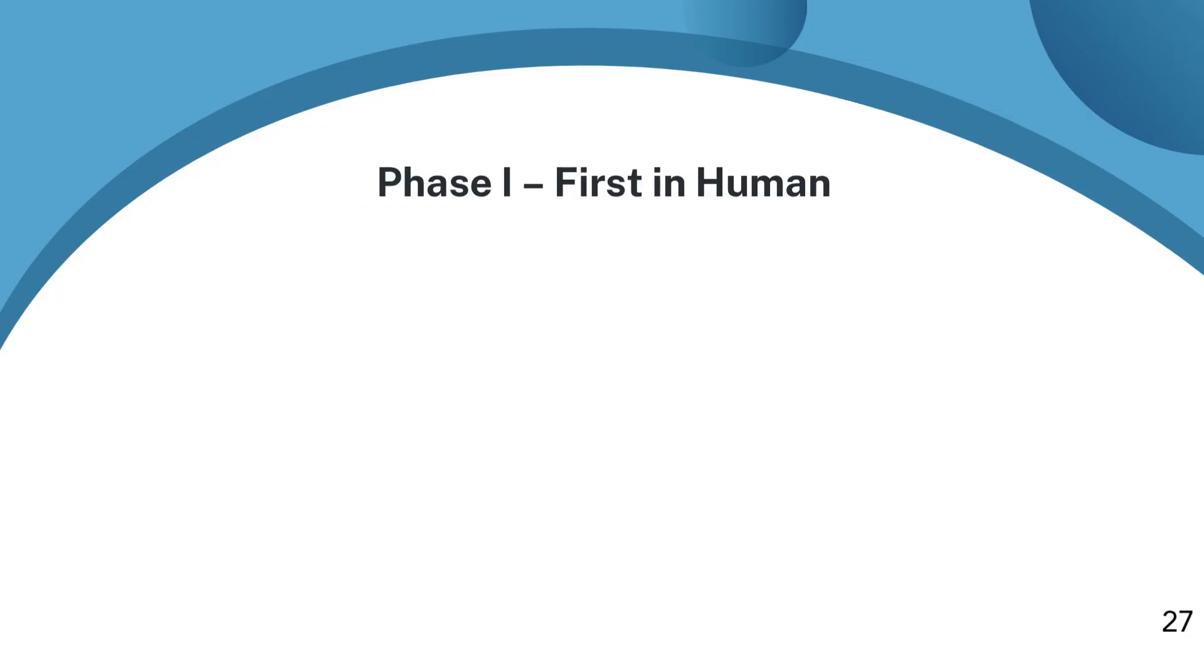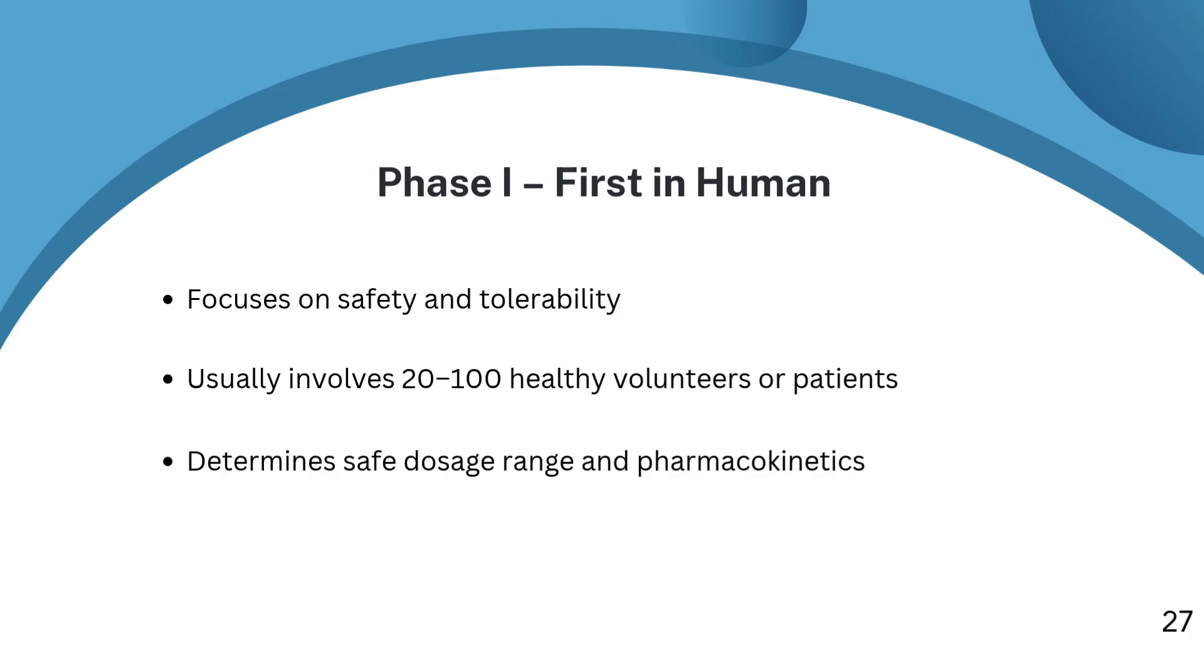Phase one: is it safe? We start with phase one, the very first time the drug is tested in humans. At this point, we're not asking if the drug cures the disease. We're asking a much more fundamental question: is it safe? This phase usually involves a small number of participants, maybe 20 to 100 people. In most cases, these are healthy volunteers, unless the drug is for something like cancer or another serious condition, in which case patients might be involved from the start. Here, researchers are trying to figure out how the drug behaves in the body, how it's absorbed, metabolized, and excreted. This is where we study the pharmacokinetics and look closely for any side effects or dose-limiting issues. It's a critical gate. If the drug can't demonstrate safety here, it doesn't move forward.